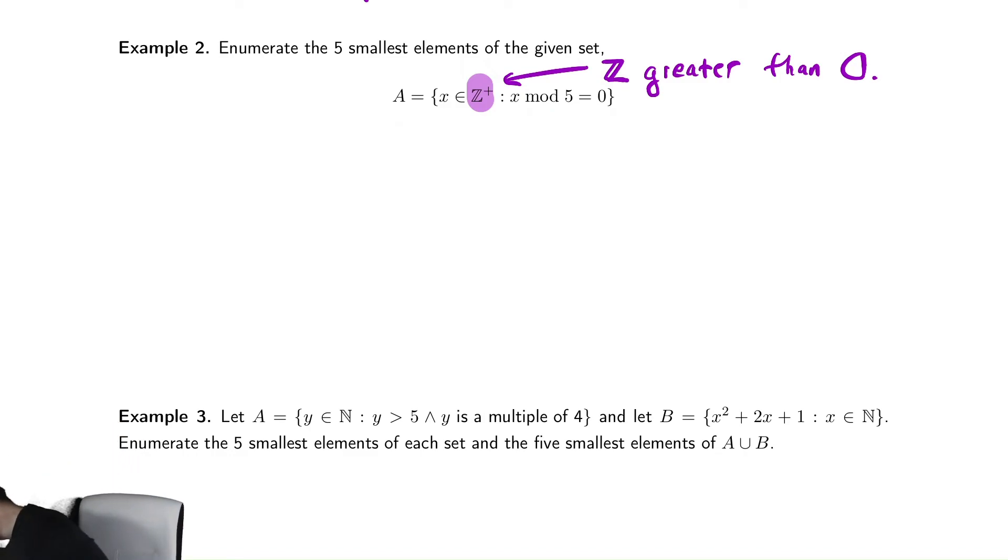So the elements here are going to be five, ten, fifteen, twenty, and twenty-five.